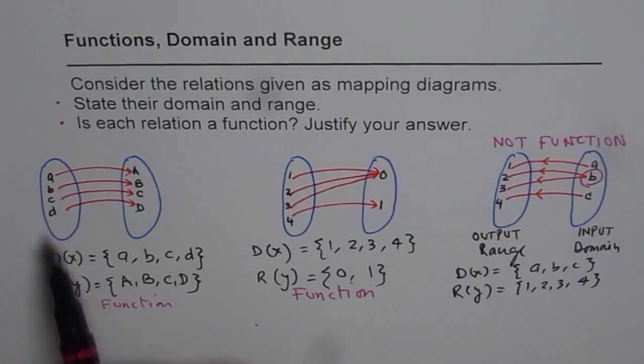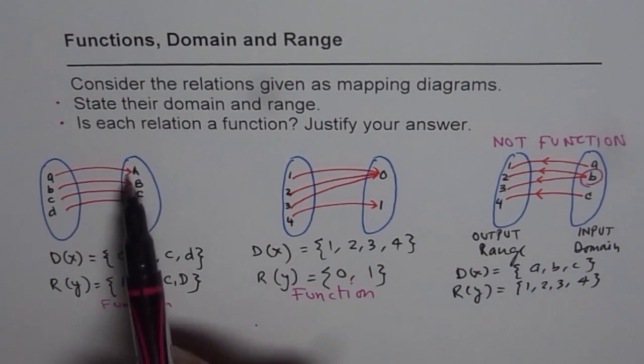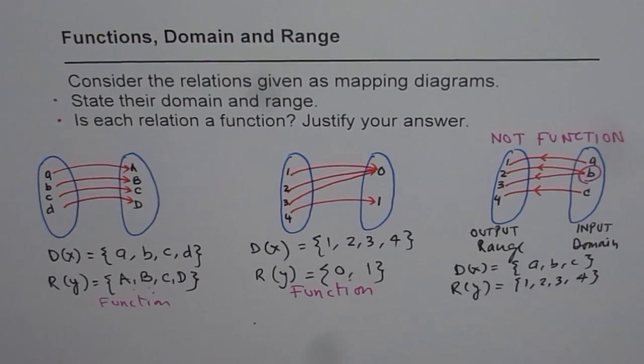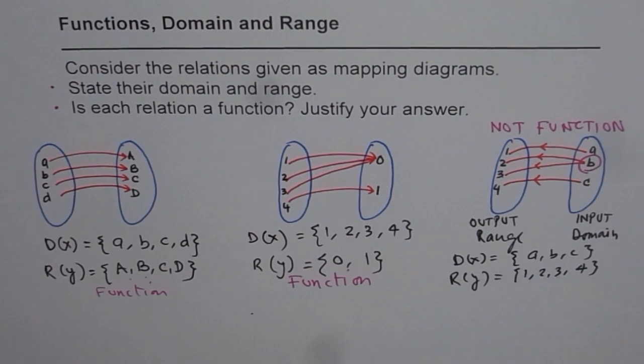All the elements in domain are these, elements in range are A, B, C, and D capital. That is how we need to look at the mapping diagrams and answer the questions. I hope the point is well taken. Have a good look at it. Thank you and all the best.